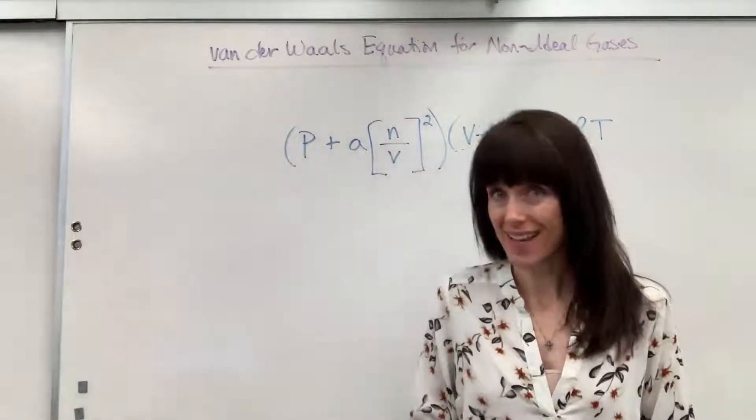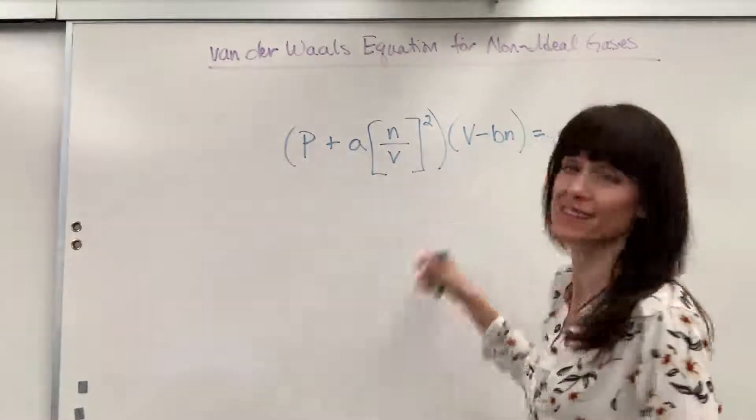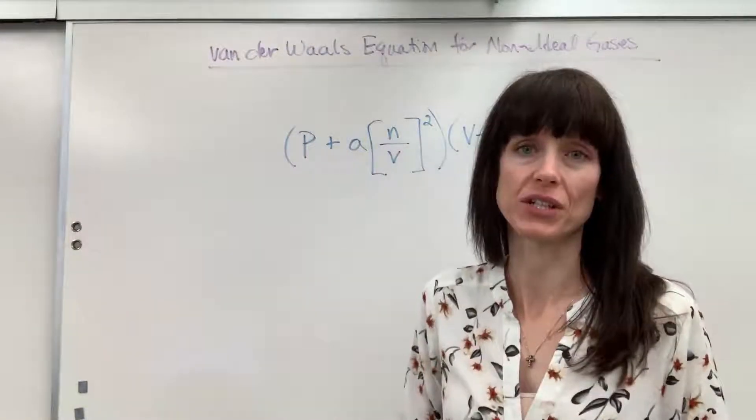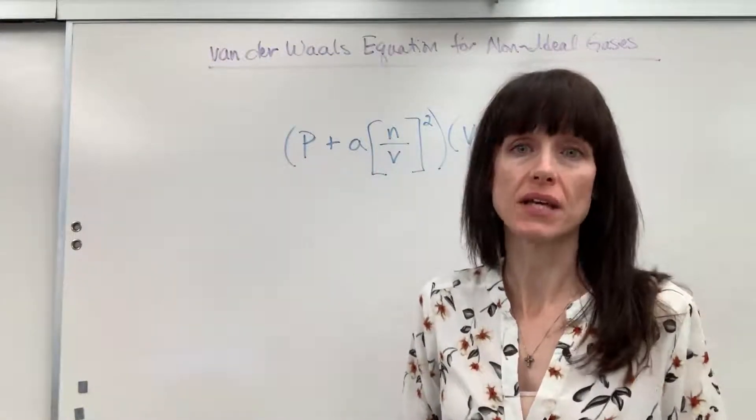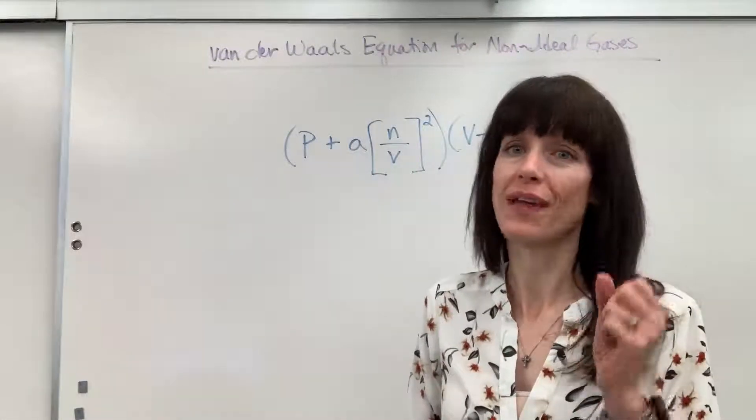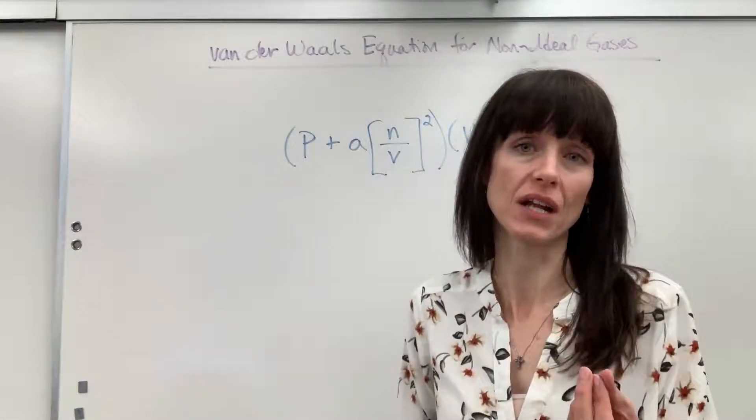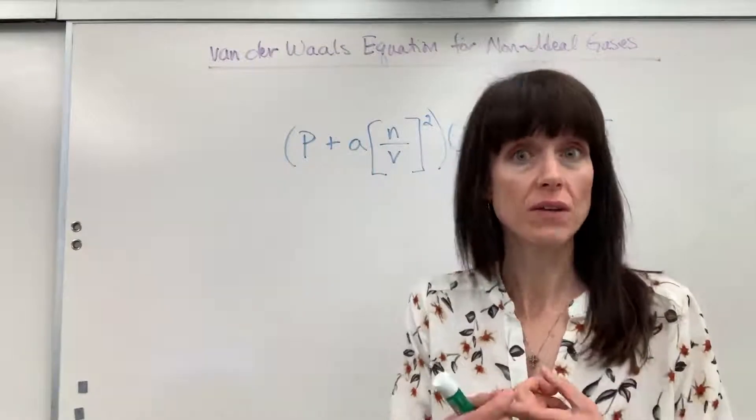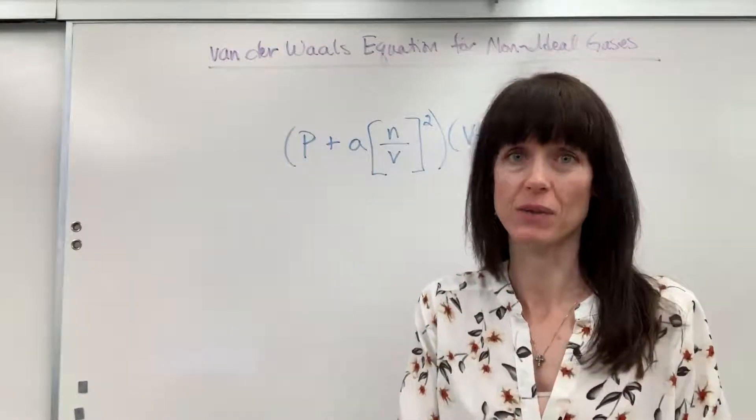Hi. Non-ideal gases with an equation. This is called the Van der Waals equation. And what it does, it allows us to take PV=nRT, the ideal gas law, and adjust it to account for the two deviations of non-ideal gases: the fact that volume counts and that there is attraction and repulsion.